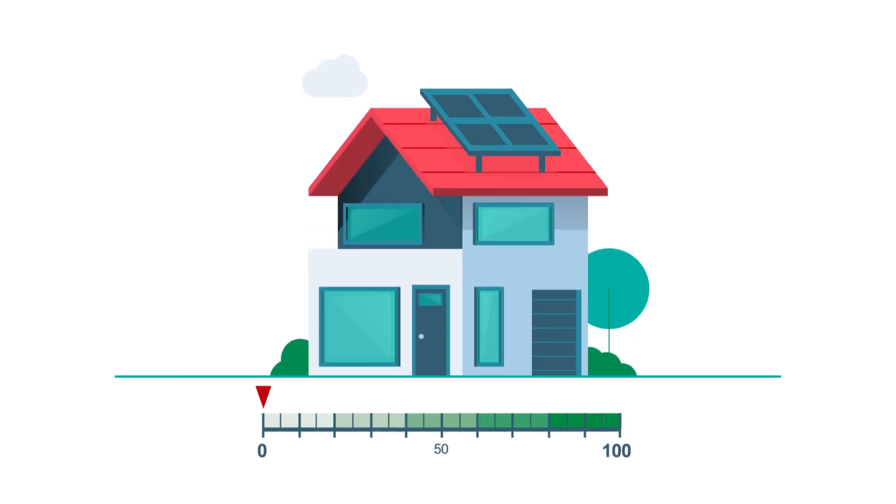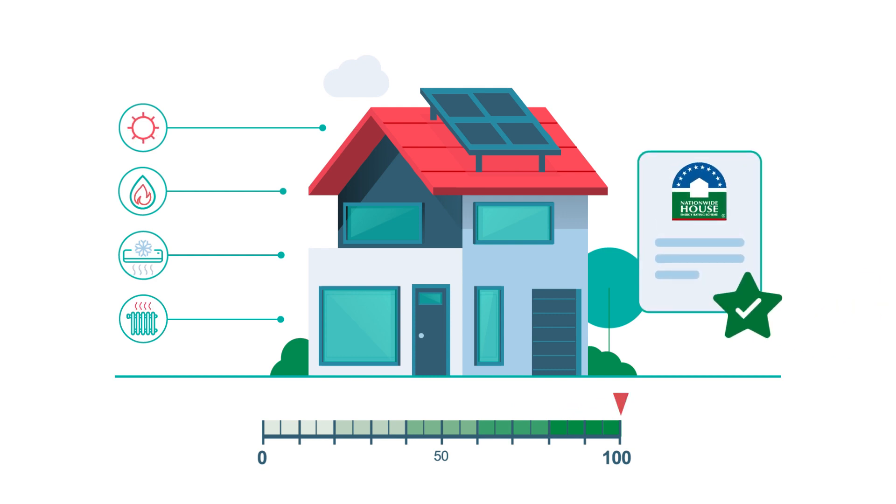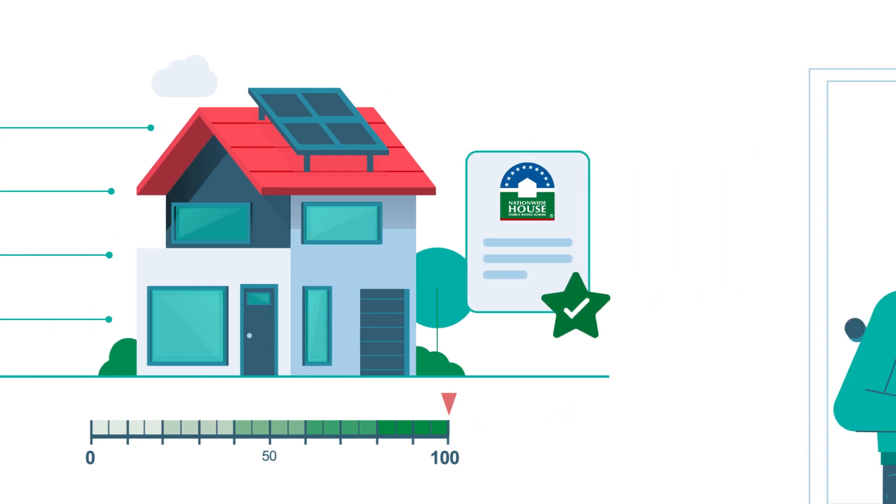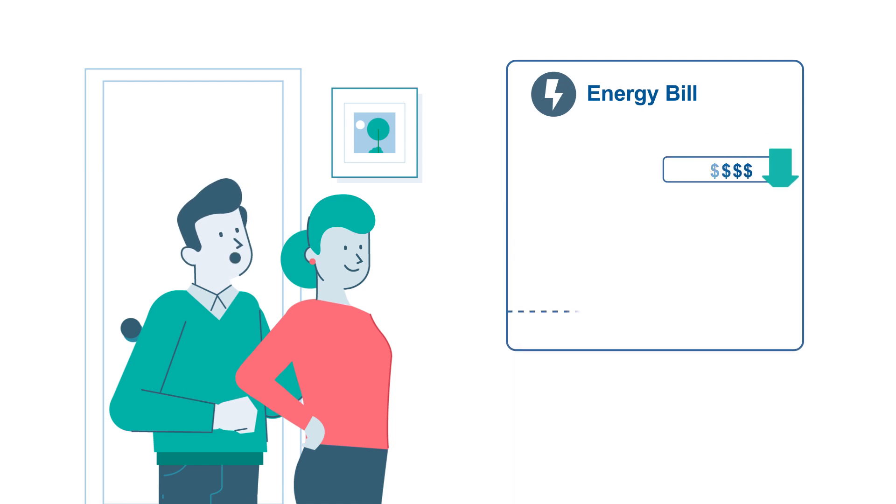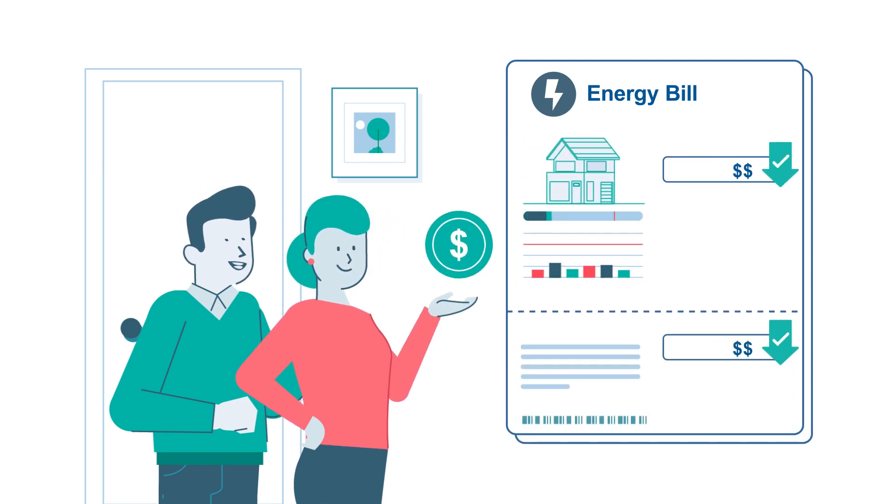Making these improvements in the planning stage before they build means Jan and Sam will now have a more comfortable home with a high energy efficiency rating. Their home design uses less energy and their bills are cheaper than they would have been without this upfront thinking.